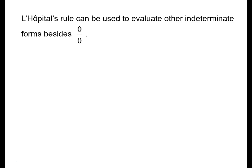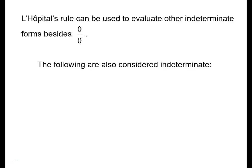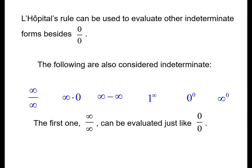Indeterminate forms aren't just 0/0. There are several types: infinity over infinity, infinity times 0, infinity minus infinity, 1 to the infinity, 0 to the 0 power, and infinity to the 0 power. For infinity over infinity, we can apply L'Hopital's rule directly — derivative of the numerator over derivative of the denominator. For the other indeterminate forms, we have to do a little algebra to get the function into fraction form first, because L'Hopital's rule requires a fraction.